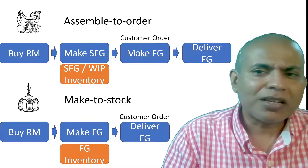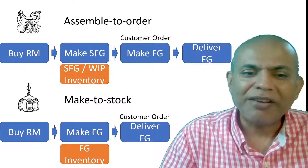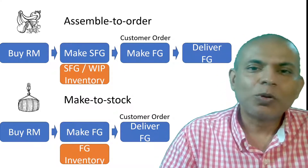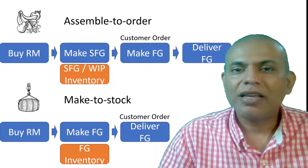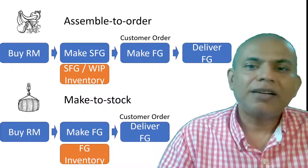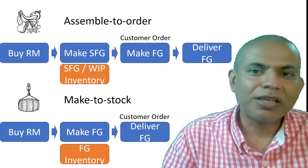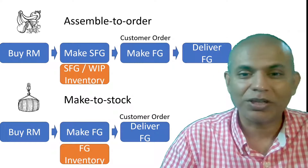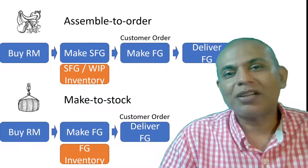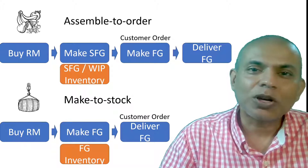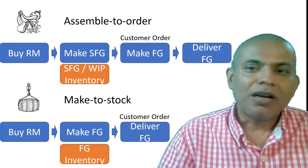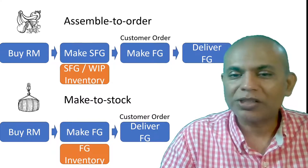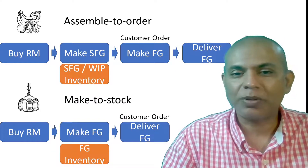Make-to-stock is the last type, and it includes the majority of goods we see in supermarkets. Here, goods are made based on forecast and staged ready as finished goods. Either customers pick finished goods up from a retail store, or in an e-commerce situation, finished goods are sent to customer locations. The only customization a customer has in a make-to-stock situation is the location of delivery — the product is pre-designed and pre-positioned at the location from where the consumer picks it up.